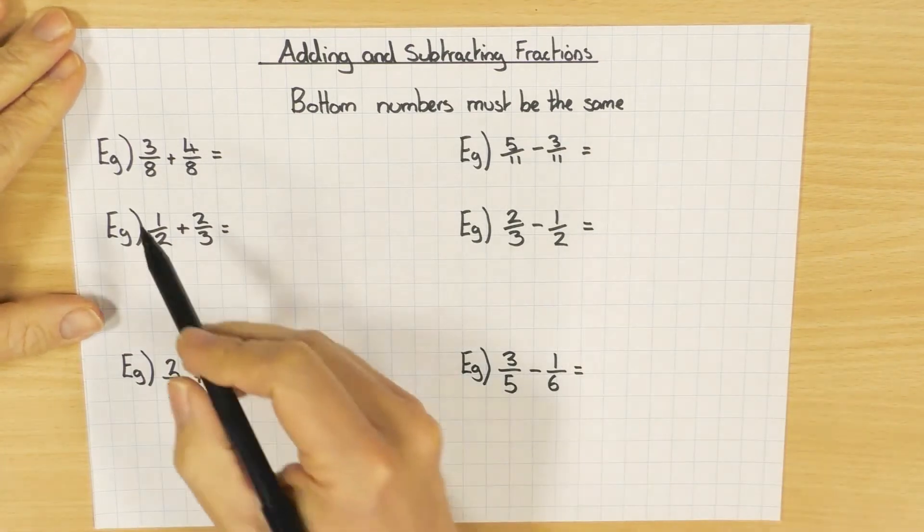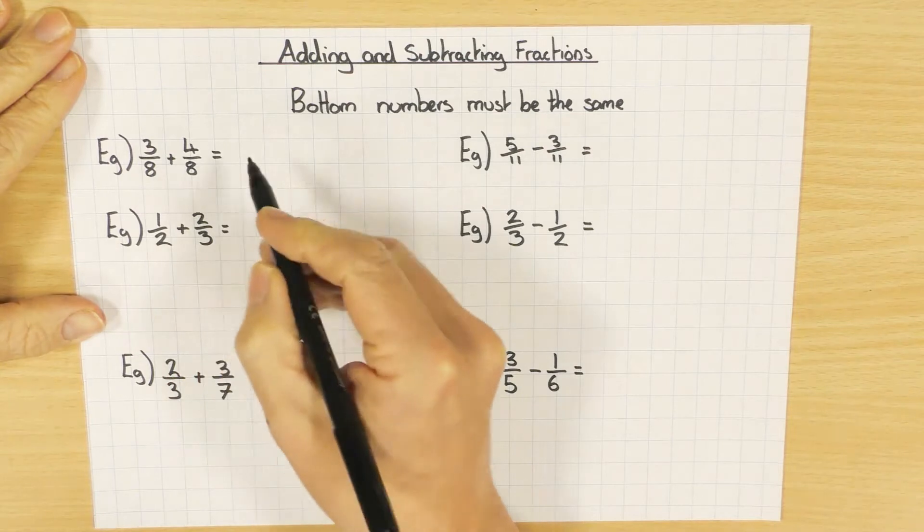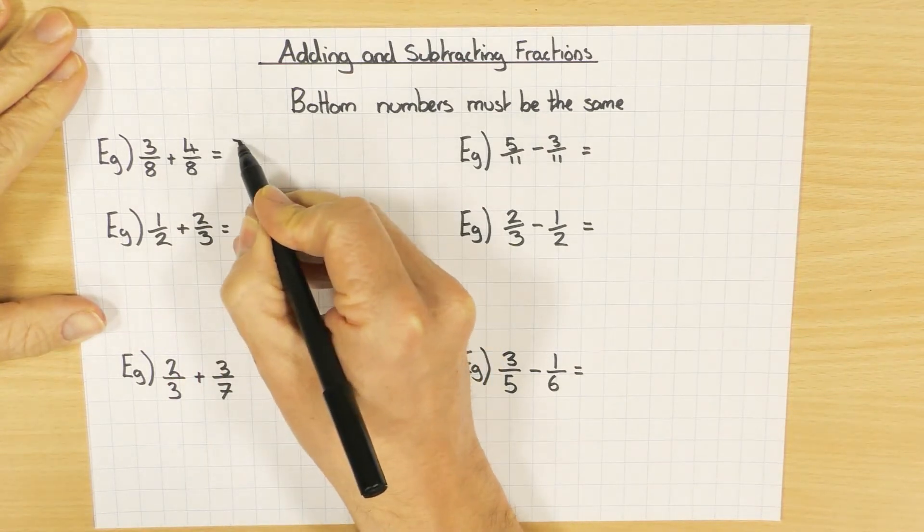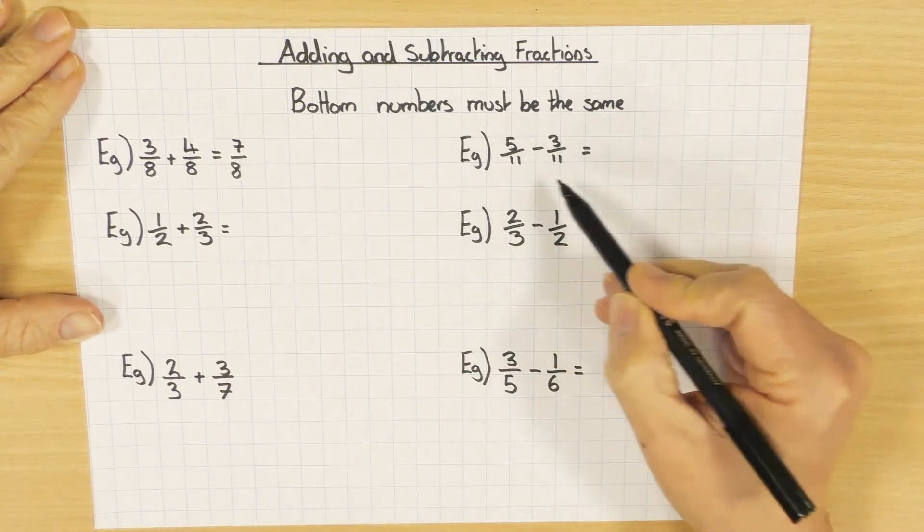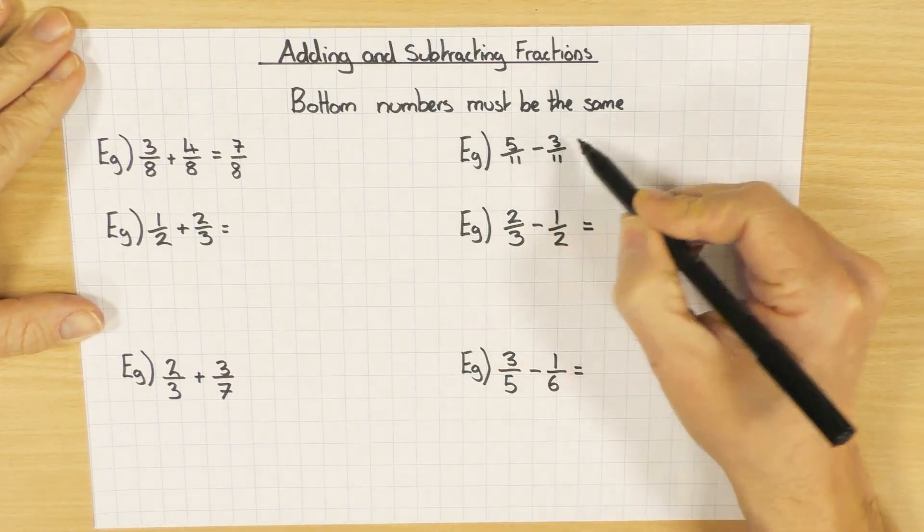First one, the bottoms are the same, happy days. Three plus four is seven, seven over eight. Five elevenths take away three elevenths. The bottoms are the same so I just take away the numerators, take away the tops. Two over eleven.